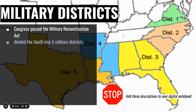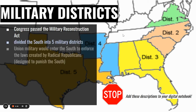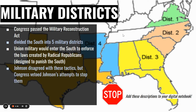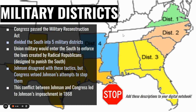These are the five districts that the South was broken up into — the military districts. Congress passed the Military Reconstruction Act dividing the South into five districts. The Union military would enter the South to enforce the laws created by the Radical Republicans, essentially going in to punish the South and make sure they followed these new laws. Johnson completely disagreed with these tactics, but Congress vetoed his attempts to stop them, leading to constant conflict between Johnson and Congress.